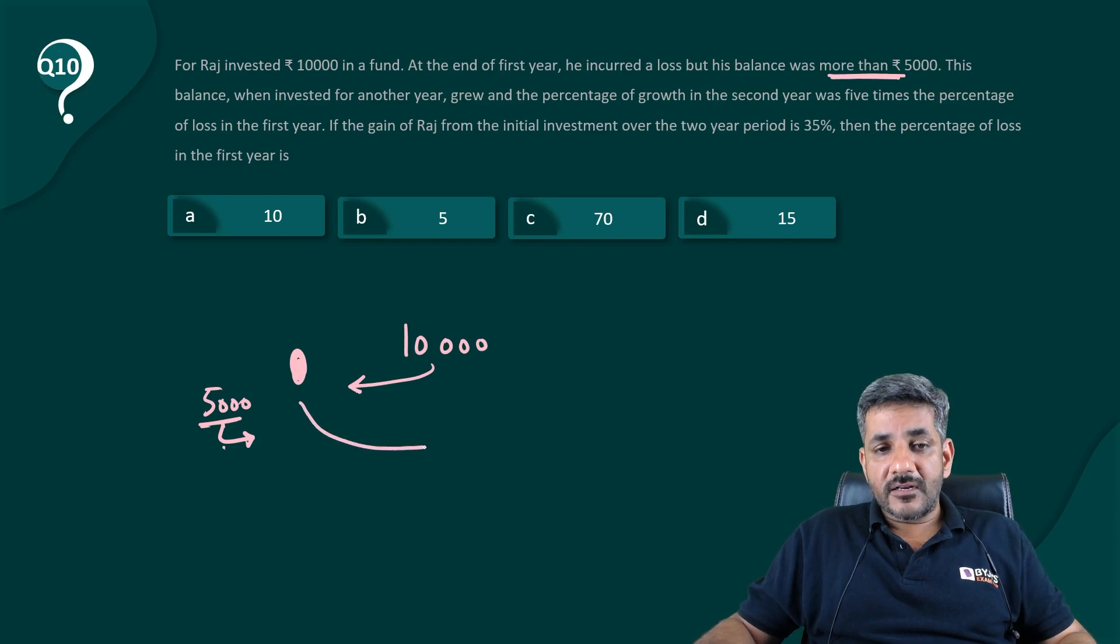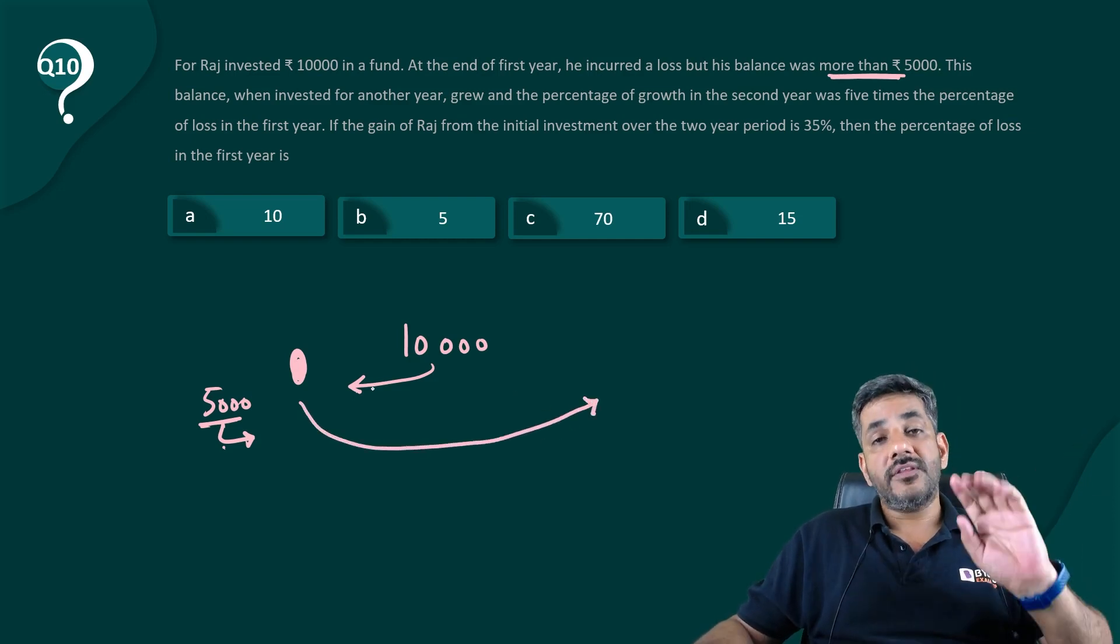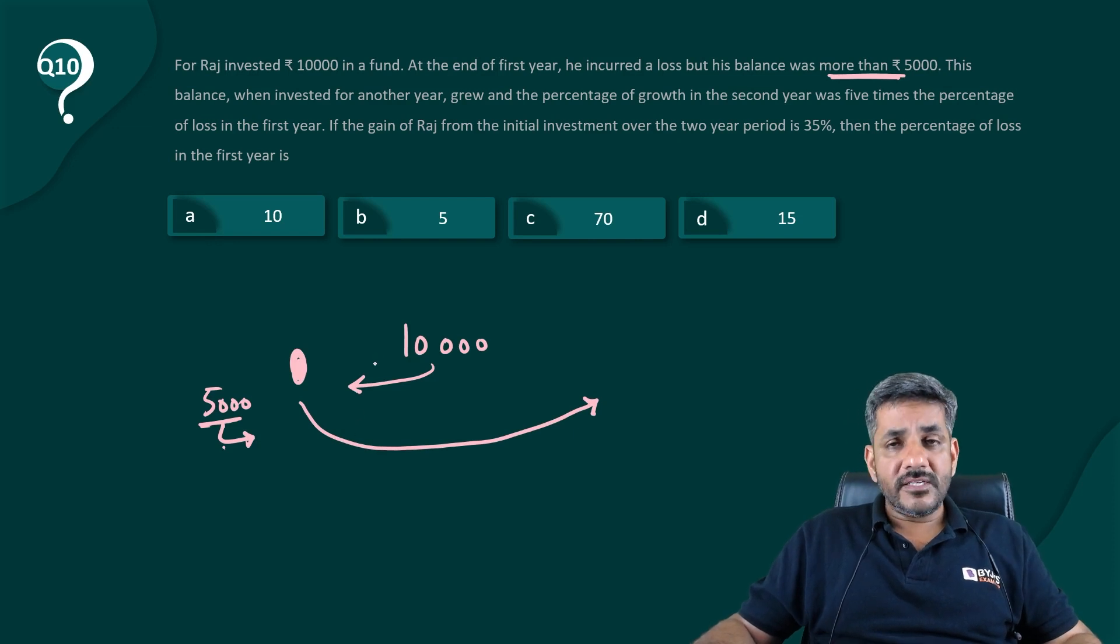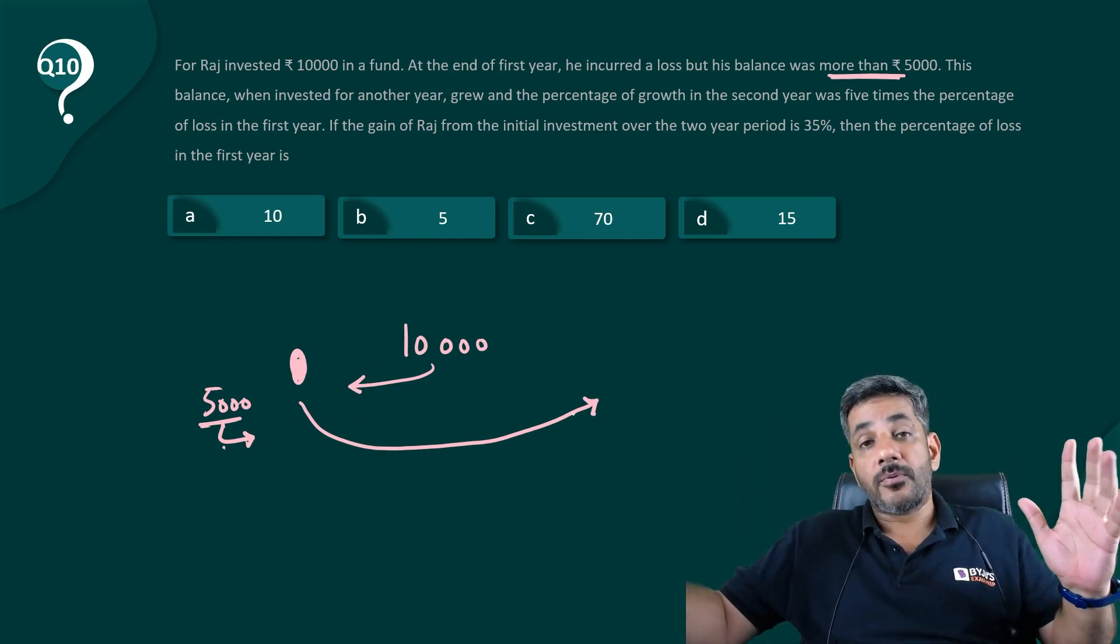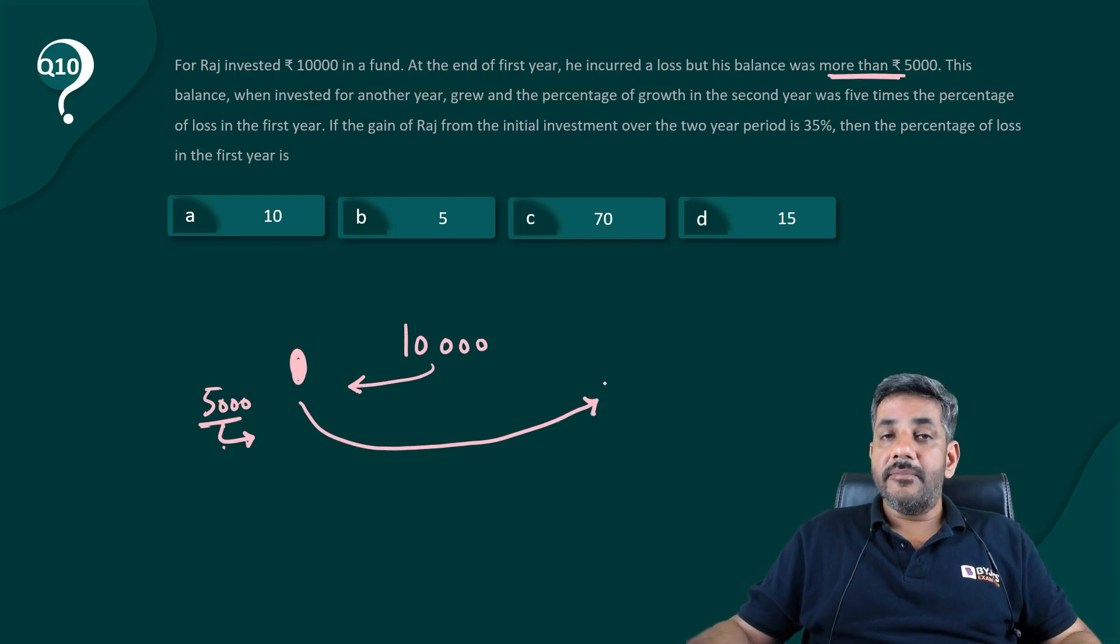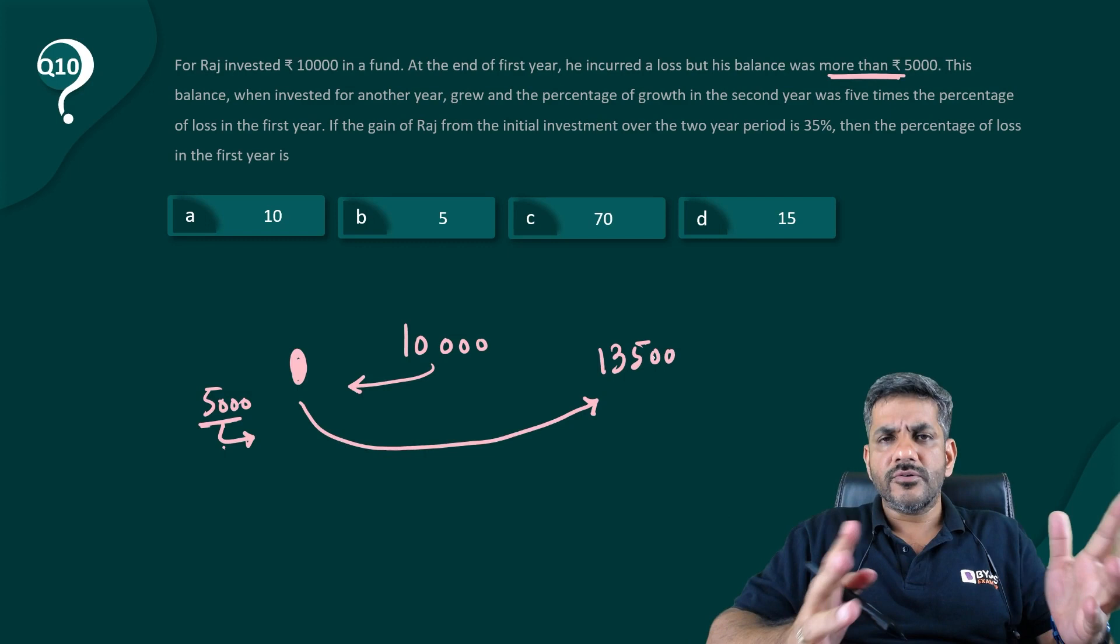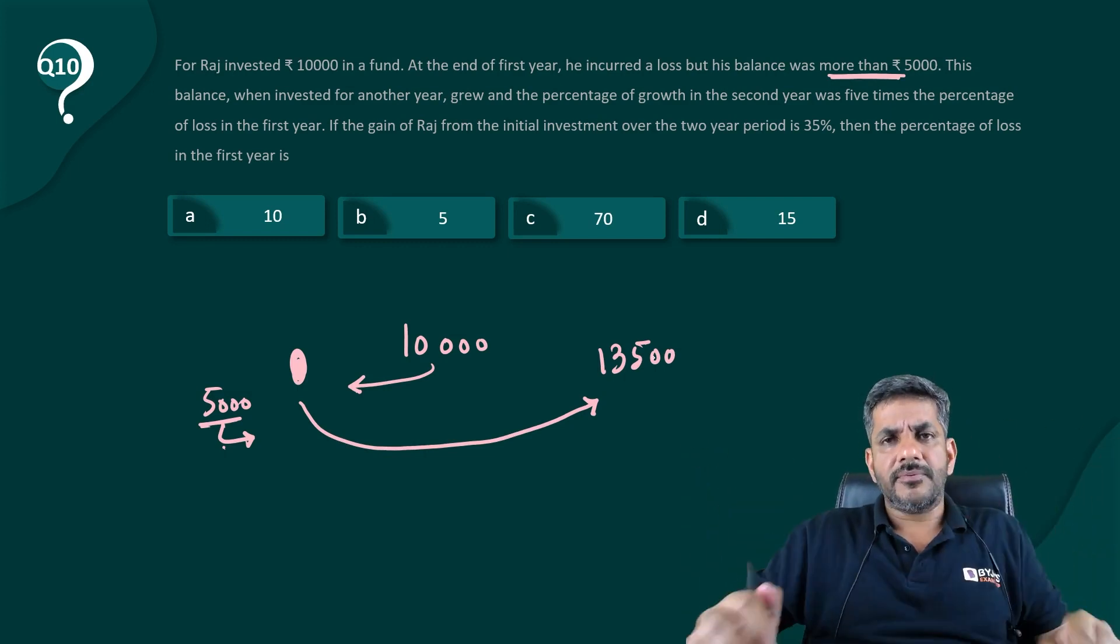And then it says the growth was five times of the first loss. So whatever this loss was, it was five times of that, so there was a big profit. And he says ultimately the value increased by 35%, that means it became 10,000 plus 35%, which is 13,500.